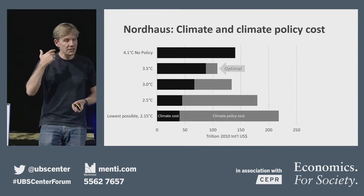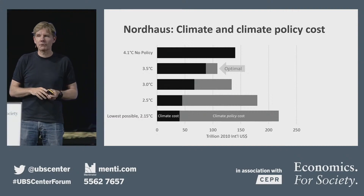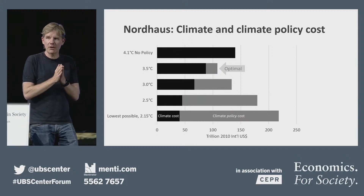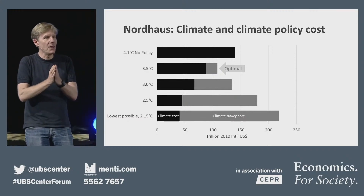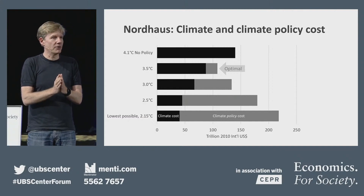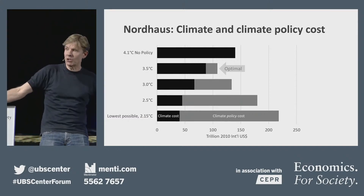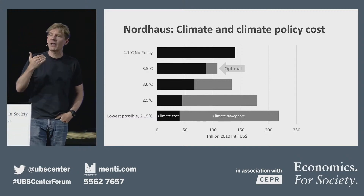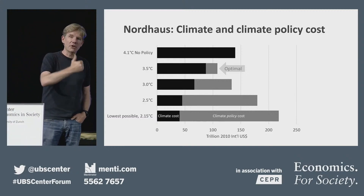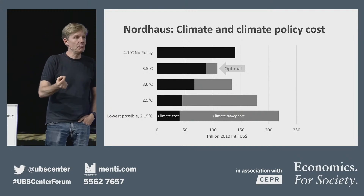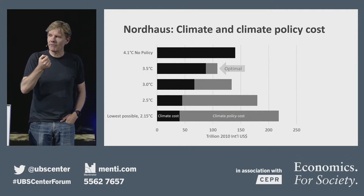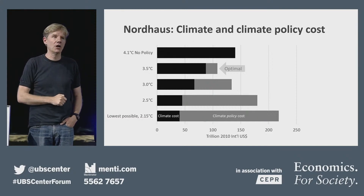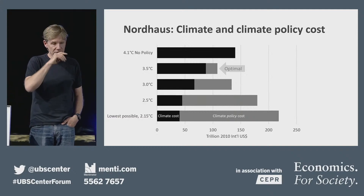That turns out, in Nordhaus' model, to be 3.5 degrees. The optimal outcome is 3.5 degrees. Notice how this is a very different outcome from what we normally hear. If you hear that only climate damages matter, you're very likely to say we should reduce down to 2 degrees or 1.5 — that's the whole political conversation right now. But there is another cost, namely the policy cost. If we have to pay both, we need a much less harsh policy, because if we do too harsh a policy, we might actually end up doing too much harm.